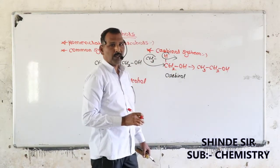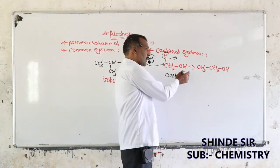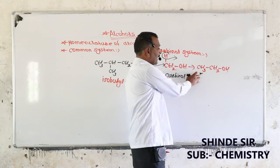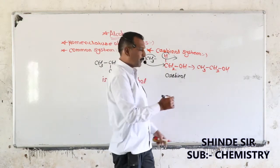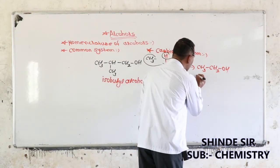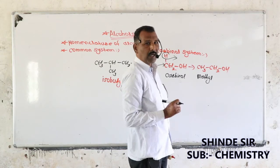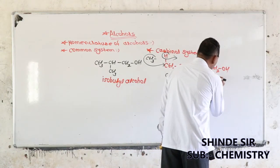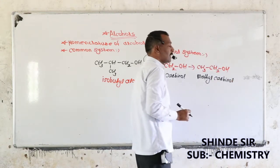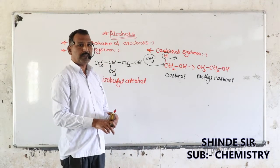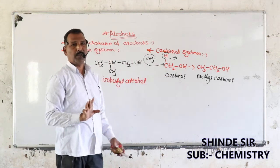According to the Carbinol system, the alkyl group which is introduced — you have to write the name of that alkyl group first. Here the introduced alkyl group is the methyl group, so we write methyl, and then add the word Carbinol again. So the name of CH3-CH2-OH is methyl Carbinol. That means: write the name of the introduced alkyl group and then add the word Carbinol.